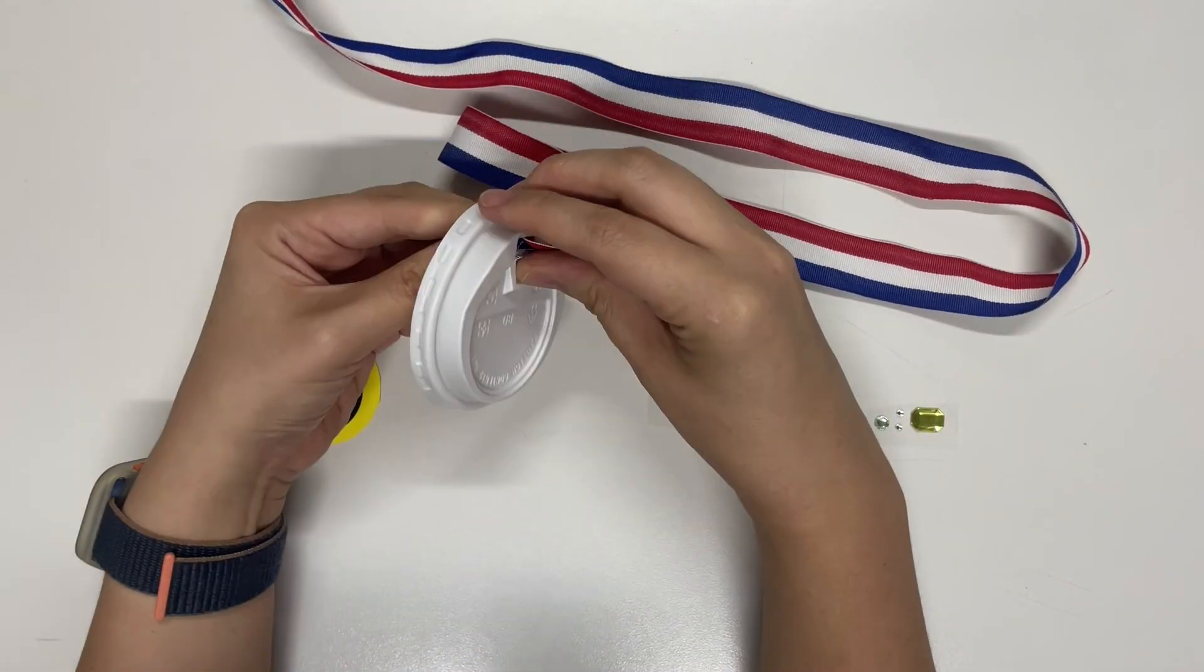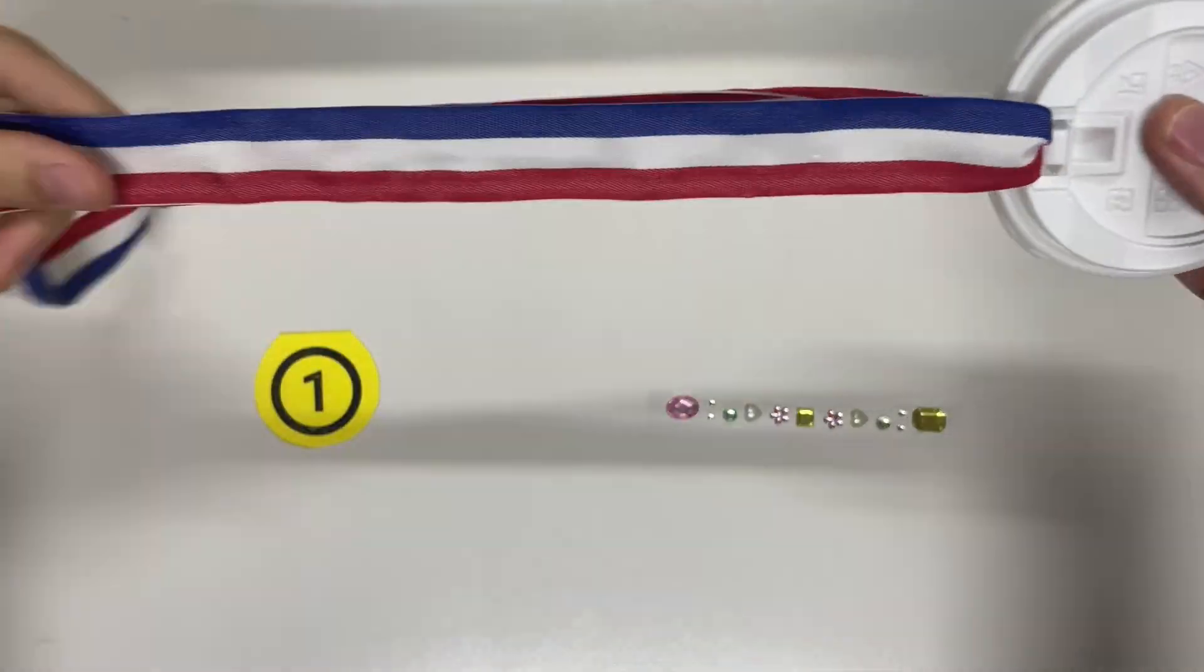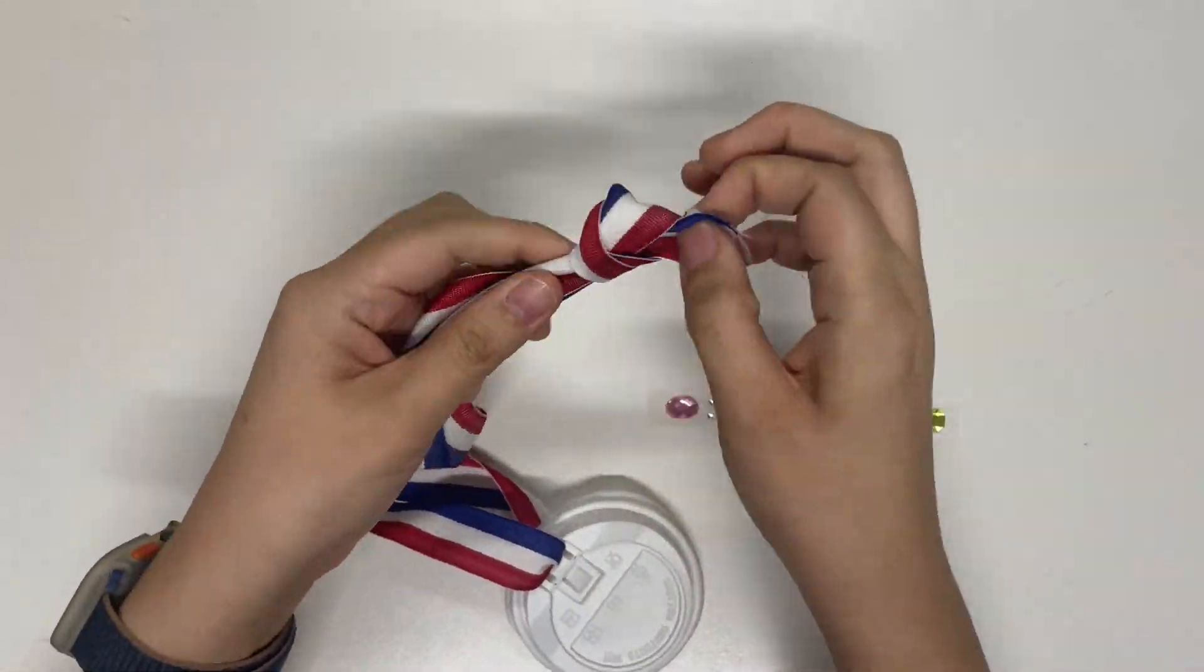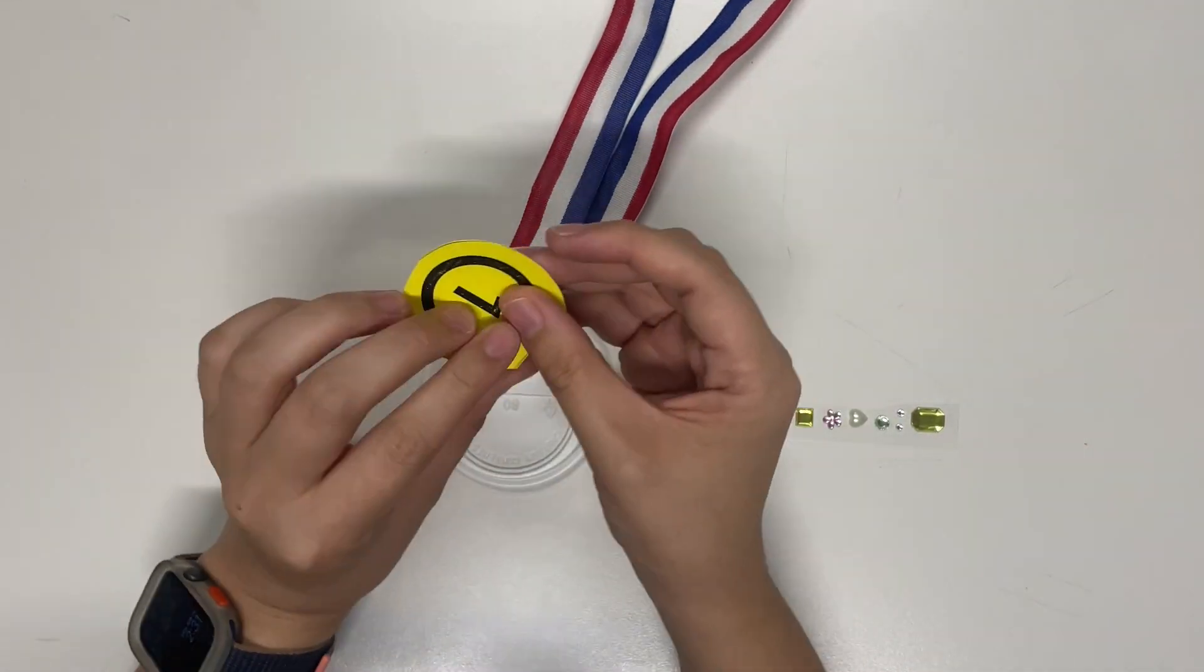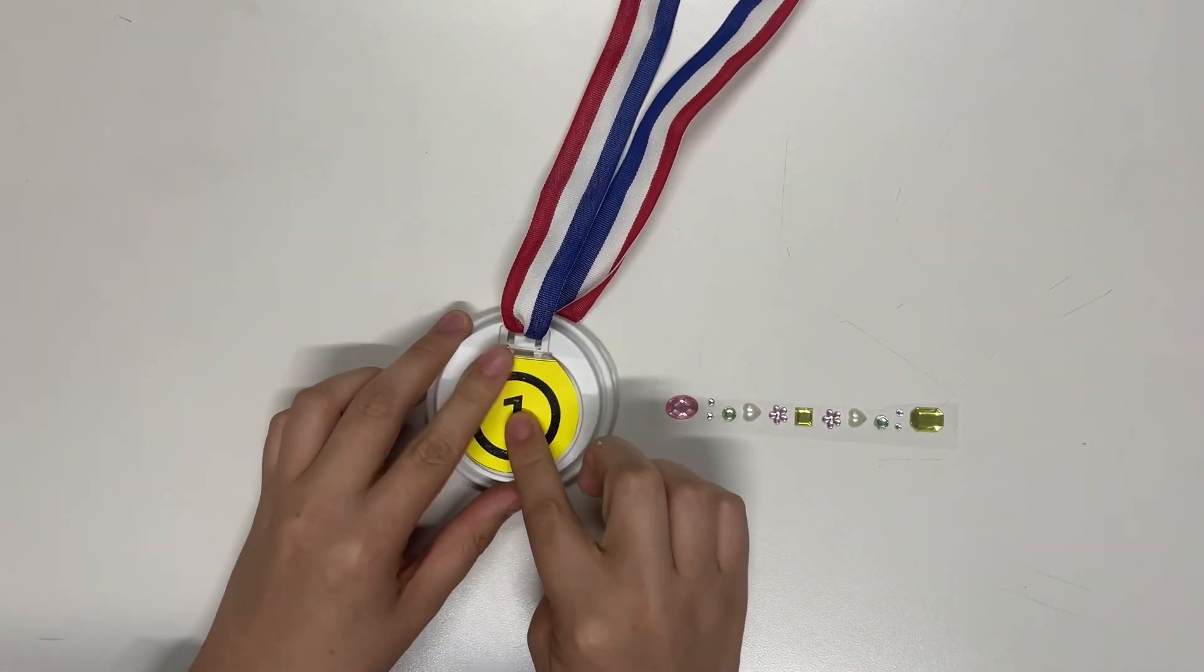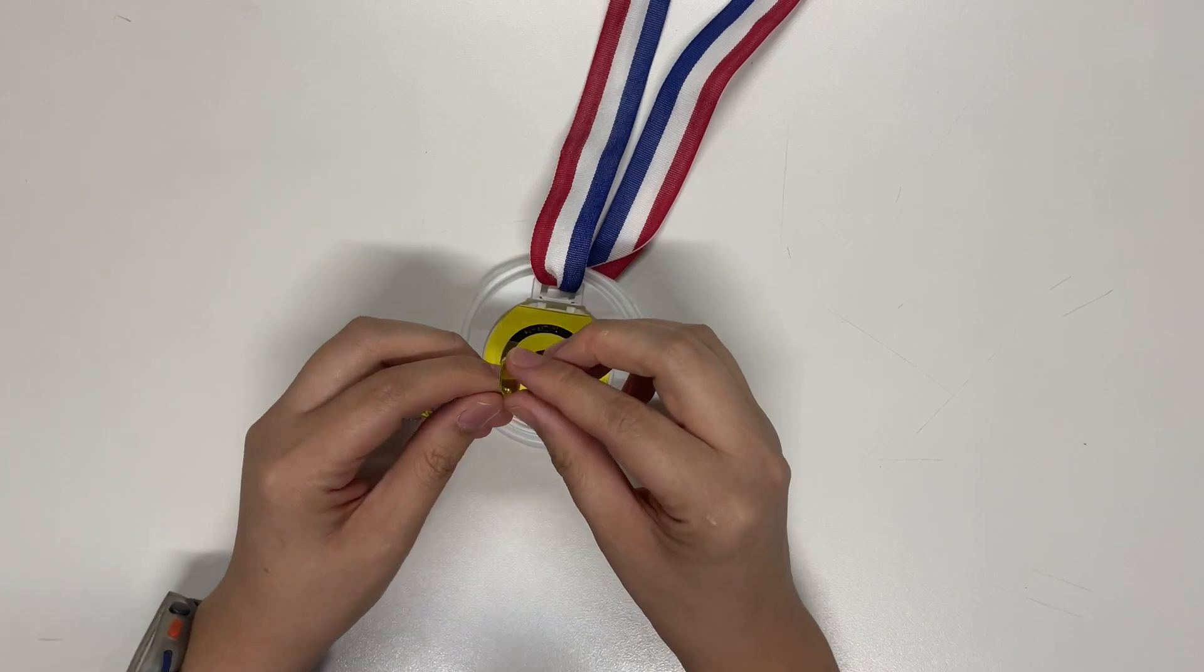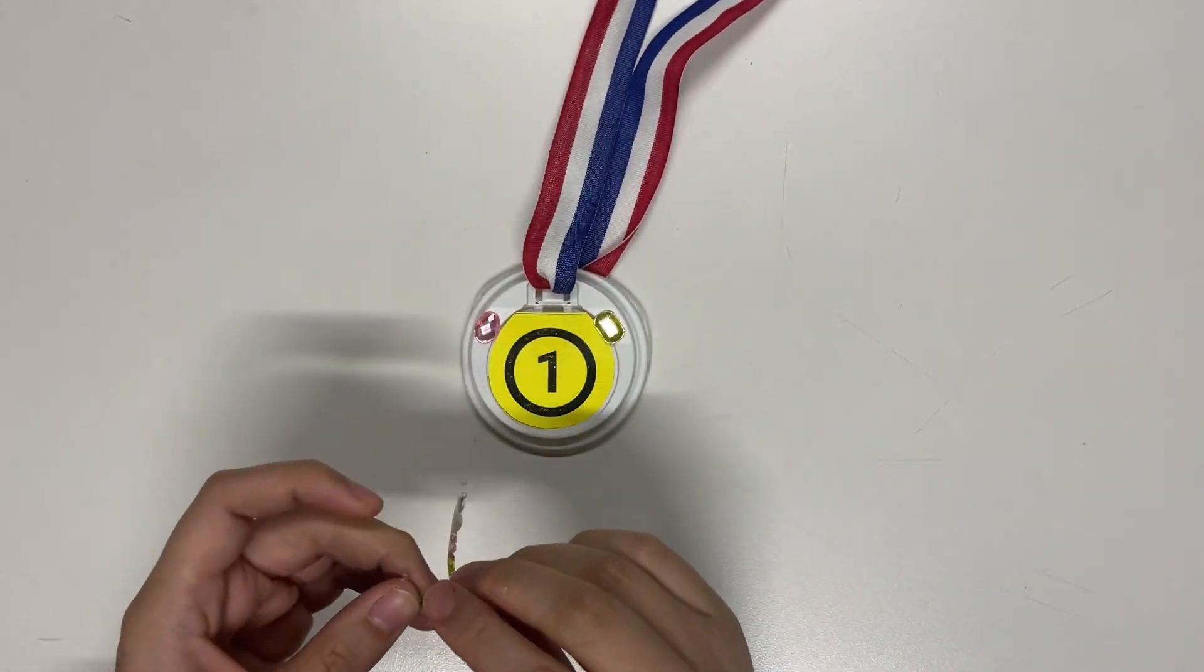Now all the kids have to do is to thread that ribbon through the coffee cup hole, tie both ends together, remove the double-sided tape film of the number one, and decorate their medal with gems.